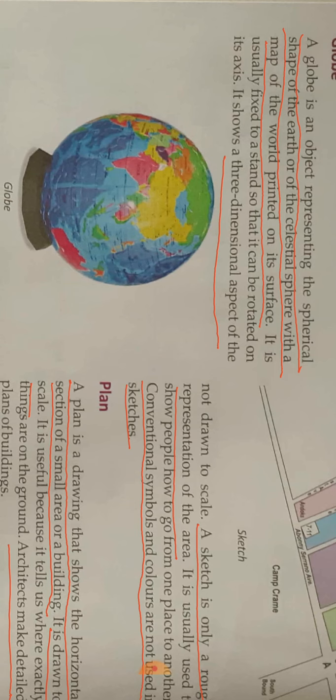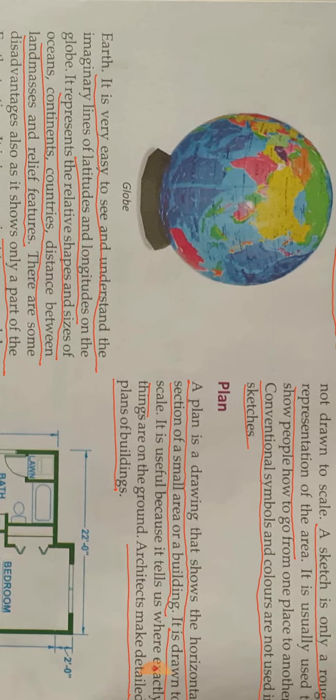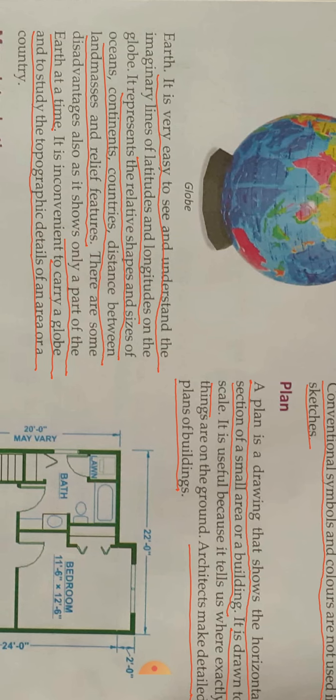A globe is usually fixed to a stand so that it can be rotated on its axis. It shows the three-dimensional aspect of the earth. It is very easy to see and understand the latitudes and longitudes on the globe. A globe represents the relative shapes and sizes of oceans, continents, countries, distance between land masses, and relief features.